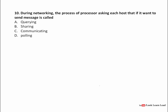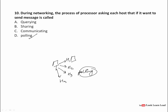The next question: during networking, the process of a processor asking each host if it wants to send a message is called polling. In polling, a system or processor asks each of its hosts — whether it's 2, 3, or N hosts — if they want to send a message or not. This process is called polling, so the answer is D: polling.